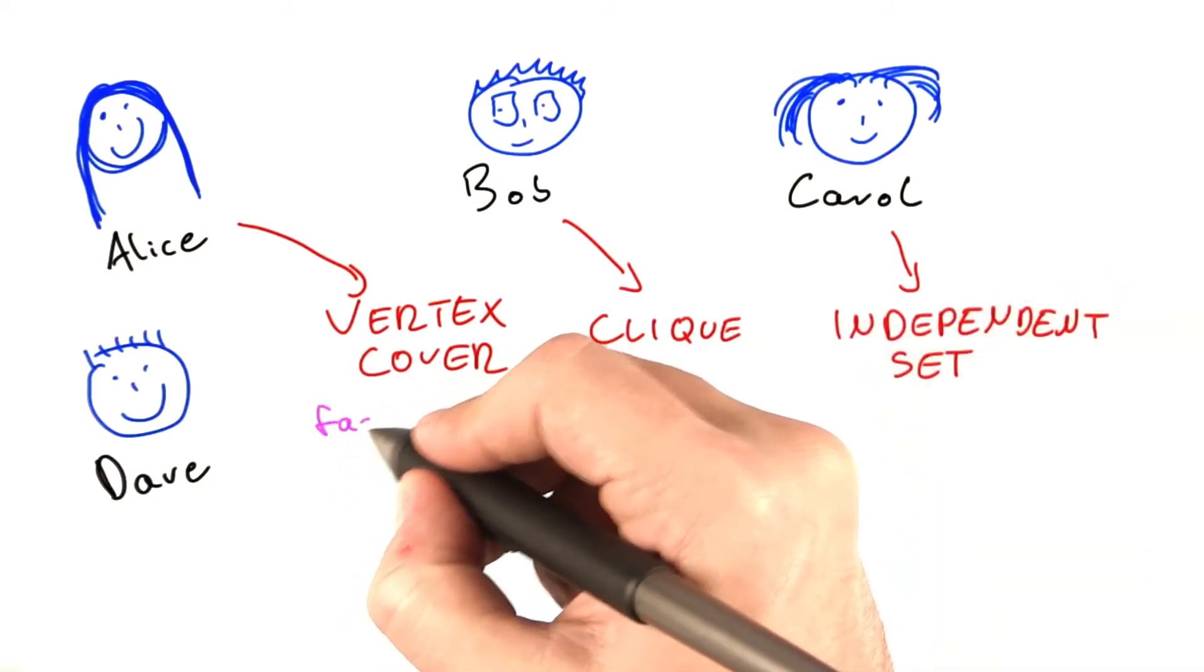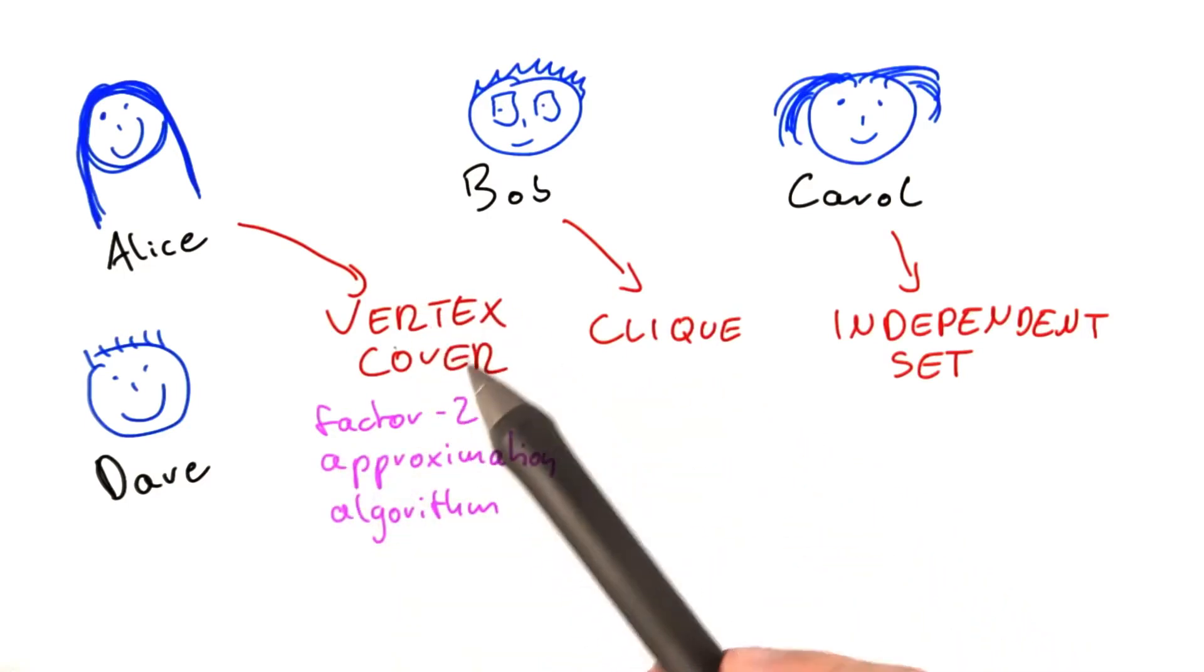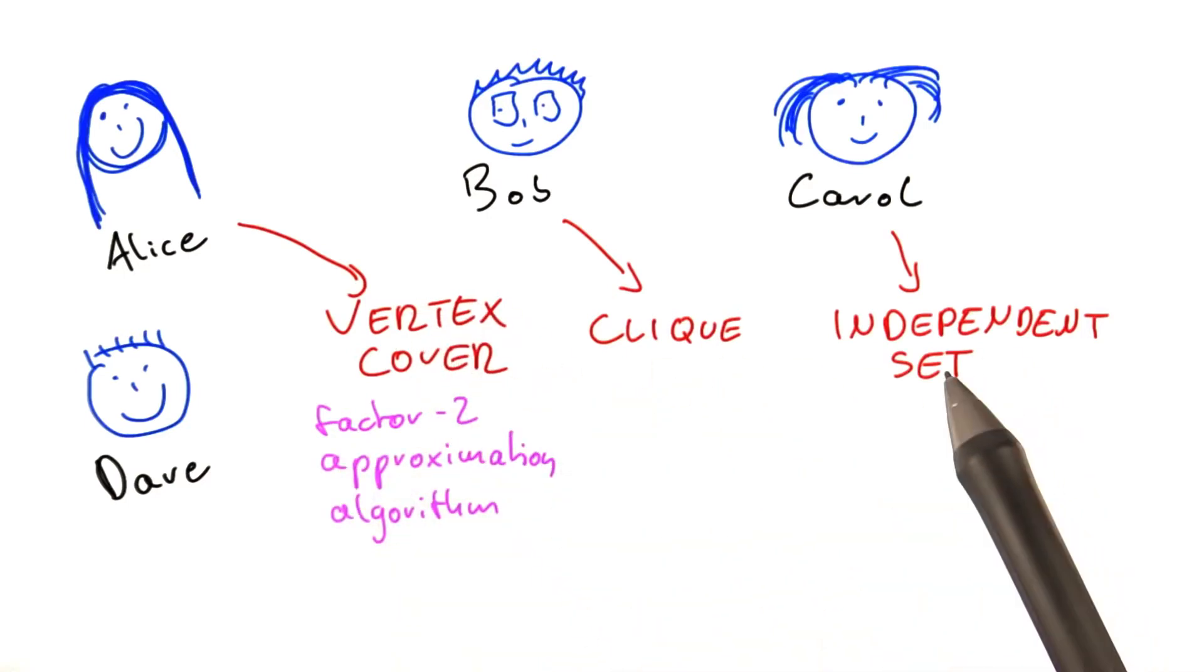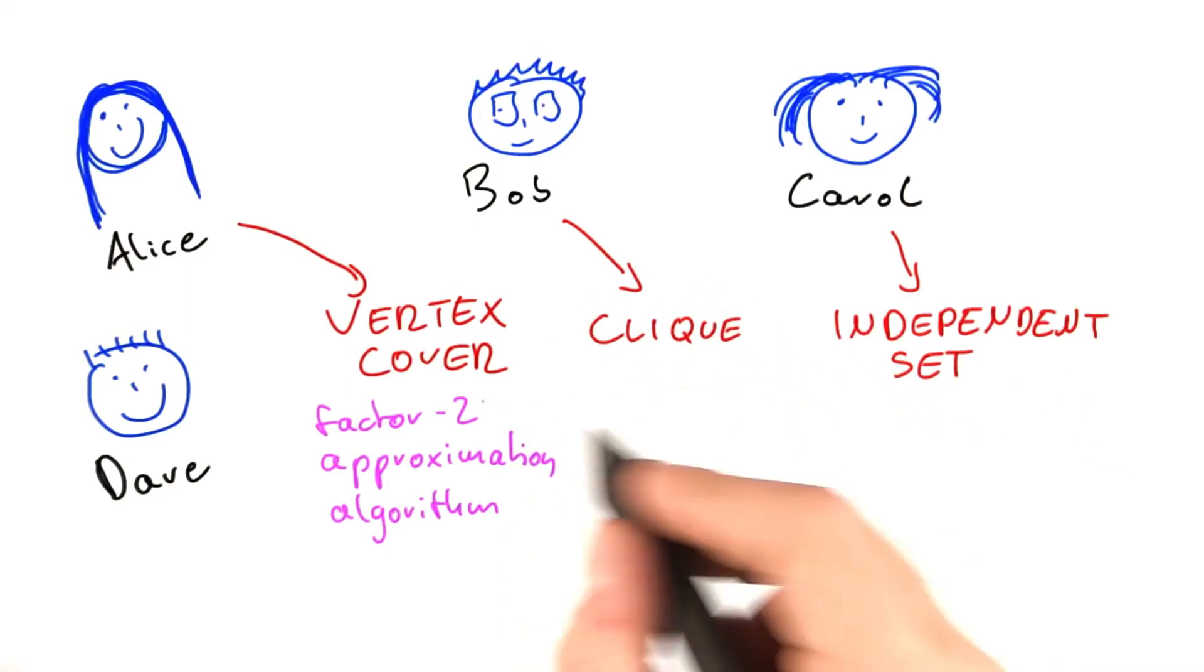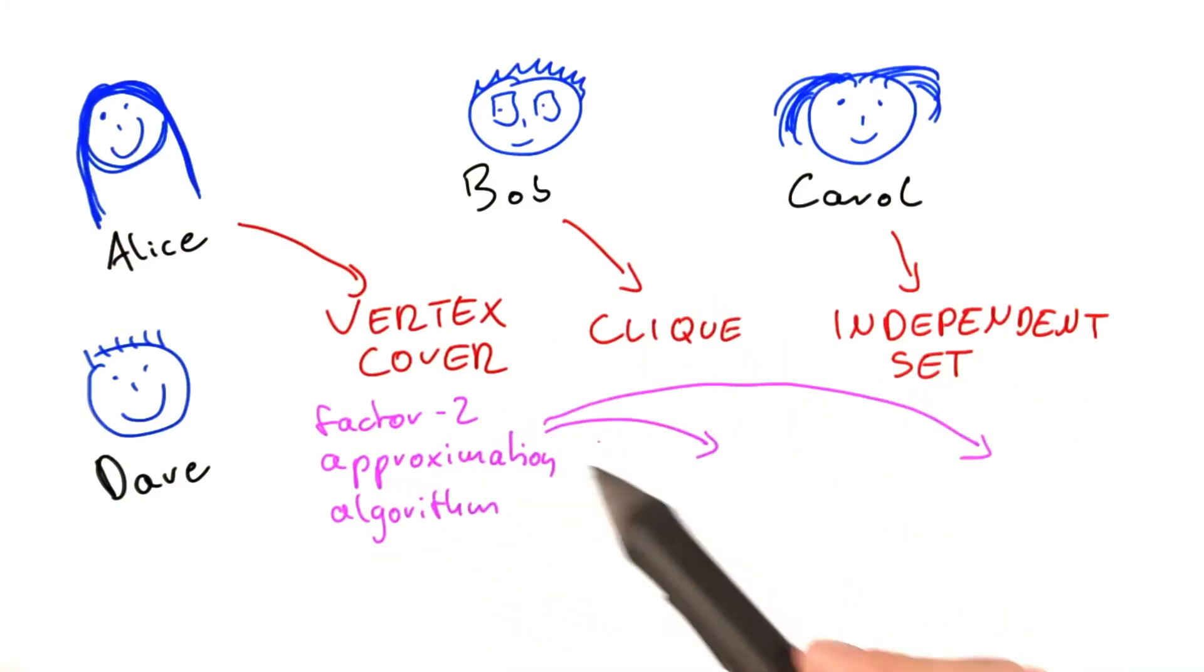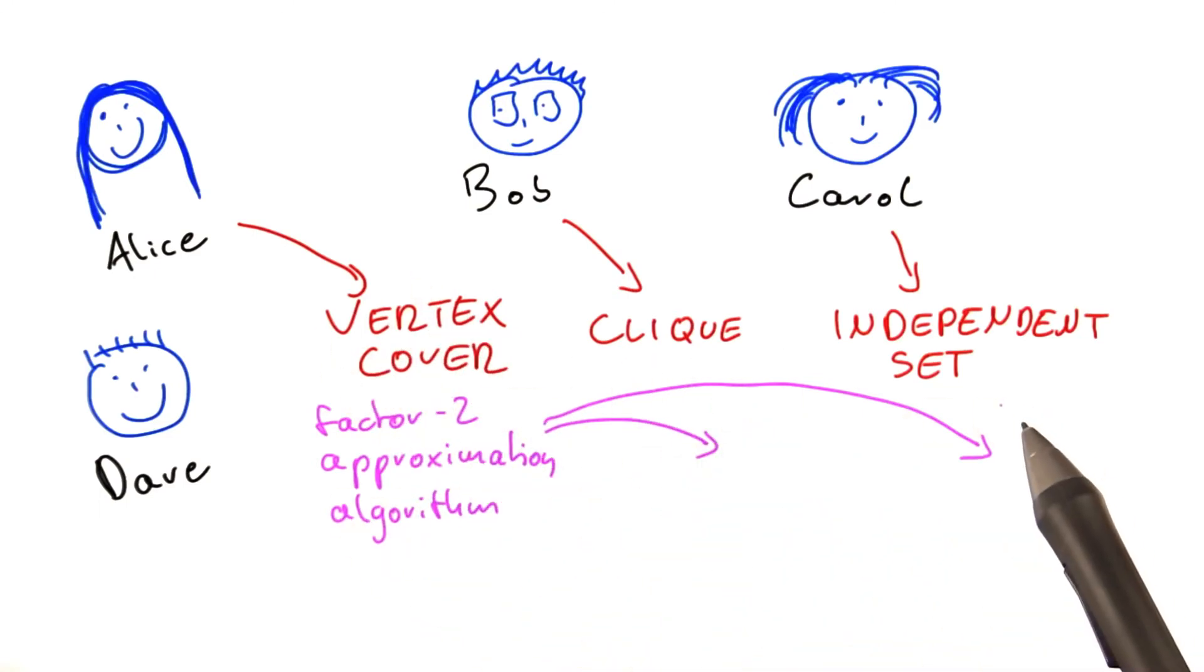So we already know that we have a factor 2 approximation algorithm for vertex cover. And from the previous units, you also know how closely vertex cover is related to independent set, but also clique. Given the close relation, we take this algorithm here and simply carry over our insight for vertex cover to clique and independent set.